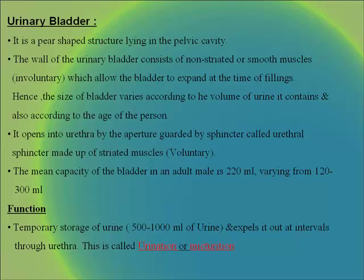The bladder opens into the urethra via an aperture guarded by the urethral sphincter, made of striated voluntary muscles. The mean capacity of the bladder in an adult male is 220 ml, varying from 120 to 300 ml. Its function is temporary storage of urine — 500 to 1000 ml — which is expelled at intervals through the urethra; this is called urination or micturition.